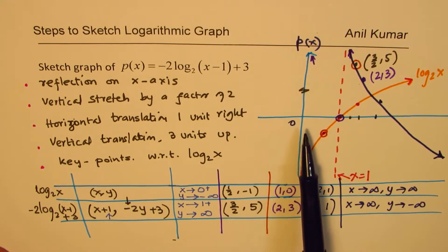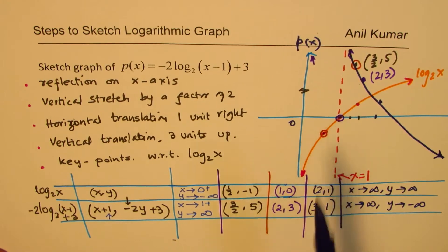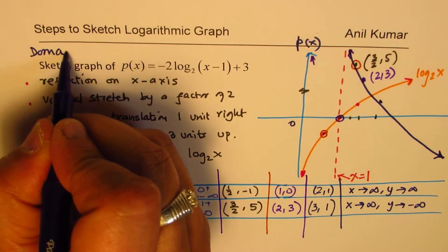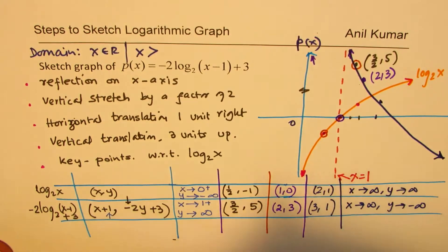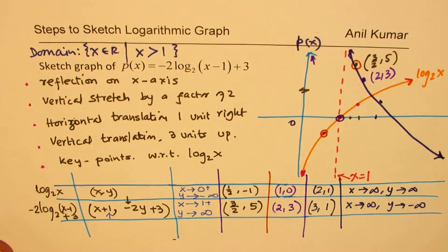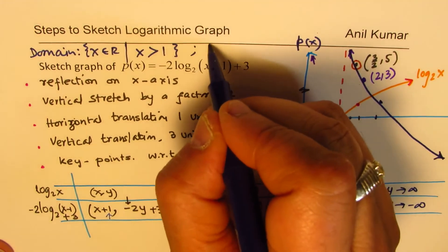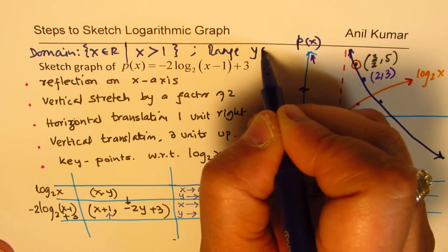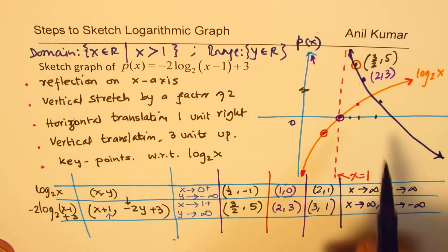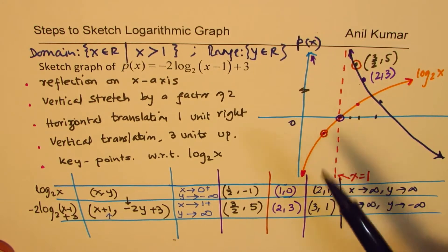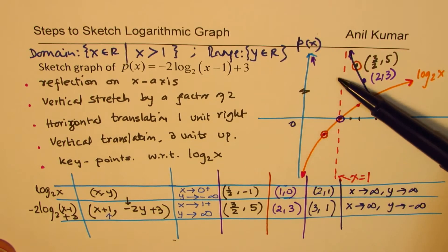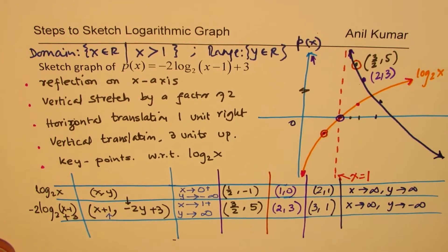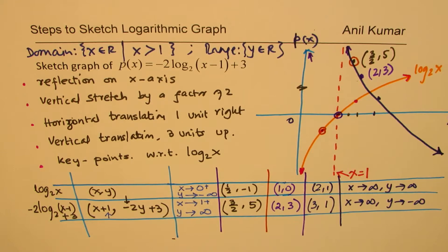So the major change here is that the domain has changed. The domain of this function now is what? Domain is x belongs to real numbers where x is greater than 1. Range is all real numbers, y belongs to real numbers. That's okay. But the domain has changed. Even the end behavior has changed. Instead of approaching negative infinity on the vertical asymptote, it approaches positive infinity. But when x approaches infinity, it approaches negative infinity. So that is how we get our transformations done.